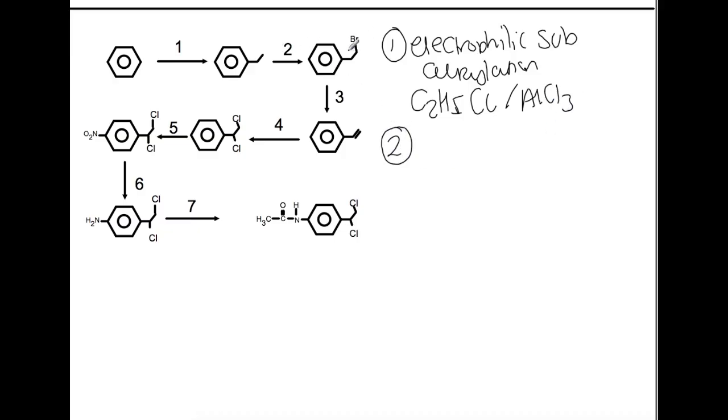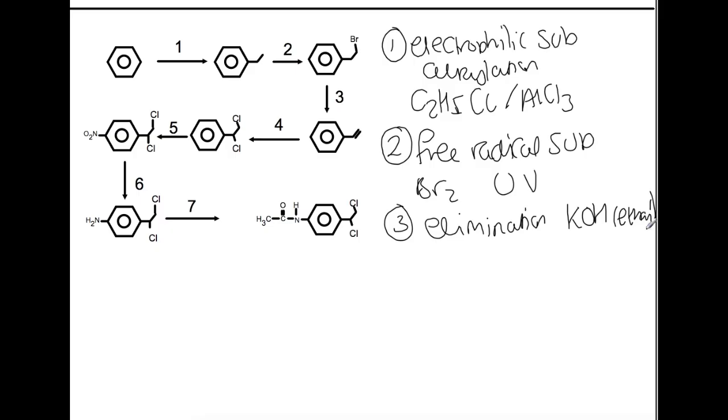For step two you're adding a bromine atom onto this alkyl group here. It's a substitution. And it's a free radical substitution. You would need bromine and UV light for this to work. For step three you're doing an elimination reaction. So you need KOH and it will be in ethanol. For step four you have an addition reaction. And this one is of chlorine. So this will have the cyclic ion intermediate. Five is a nitration, which is another electrophilic substitution.